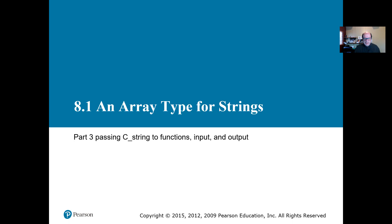We are talking about section 8.1 of the Savage C++ book, the third part of section one — the C string. We're going to talk about how to use the C string in functions, passing it as a parameter, and we're going to cover input and output on the C string.